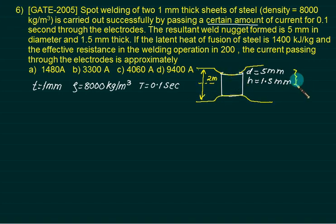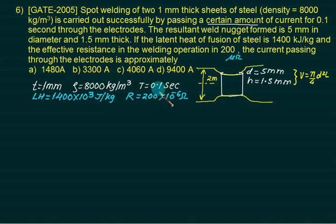He has given you the direct dimension of cylinder. We are able to calculate value of V. The volume of nugget simply is pi by 4 D square and L. Now, he has reduced the data for calculation purpose only to make your calculation simple. Only latent heat is given, 1400 into 10 to the power 3. And the effective resistance is given, R is equal to 200 micro-ohm. What is missing in this problem is melting point and the room temperature. So objective is just to solve the problem quickly.